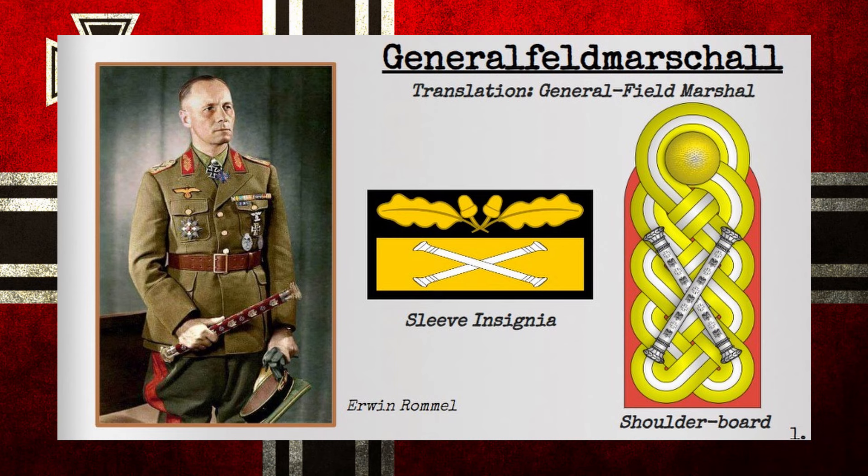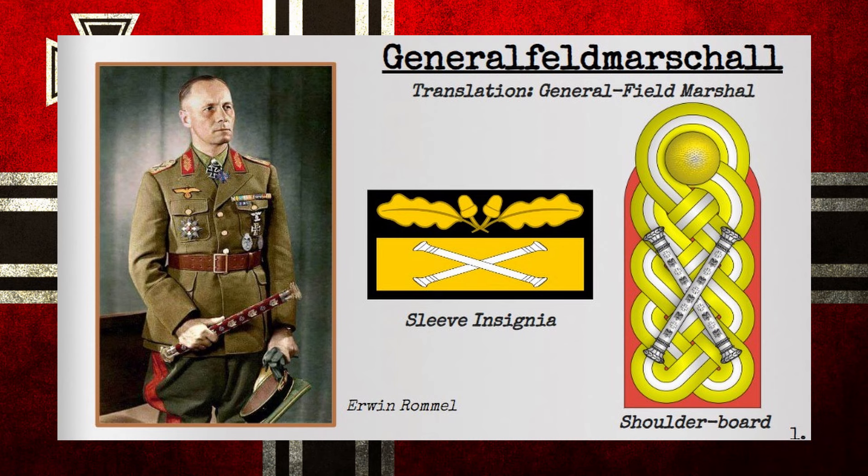The Generaloberst, or Colonel General, was the most senior of the general titles that an officer could hold. Its position was above a full General, but below a Field Marshal, with its command either being over positions such as the chief of general staff, an army group, or a field army. Notably, the title may also carry the prefix Generaloberst in dem Range eines Generalfeldmarschalls, which translates to Colonel General acting within the capacity of a General Field Marshal.